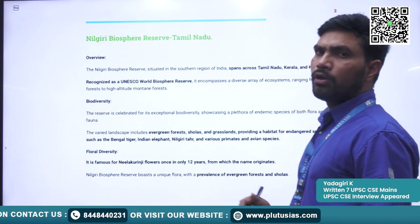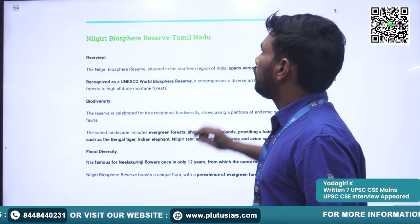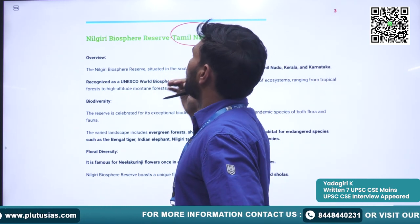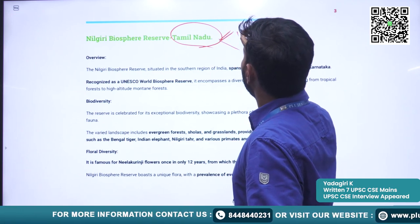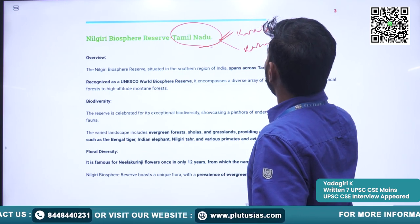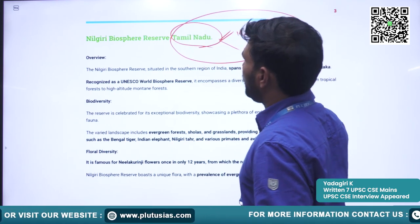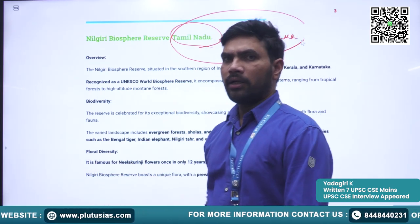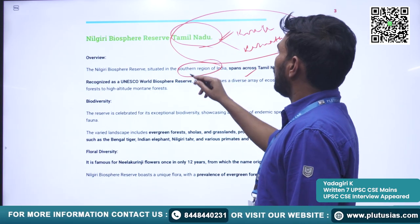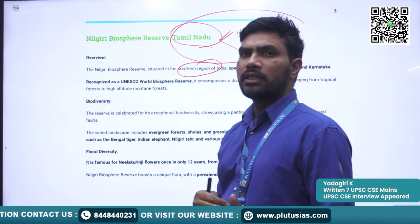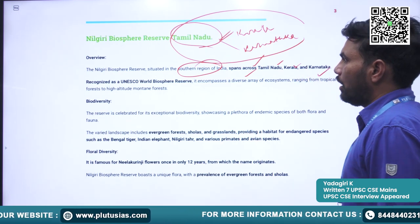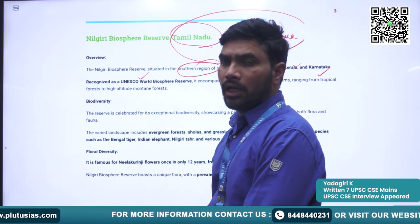We will discuss each of the 12 Biosphere Reserves. The first is Nilgiri Biosphere Reserve, majorly located in Tamil Nadu but also encompassing Kerala and Karnataka. It is spread across three states in the southern region of India, where the Eastern Ghats and the Western Ghats meet. It is recognized as a World Biosphere Reserve.